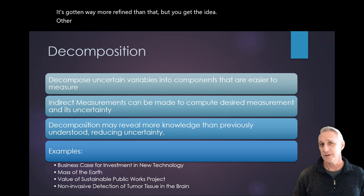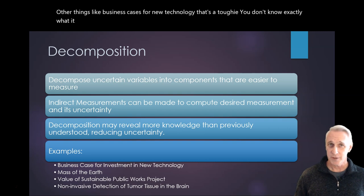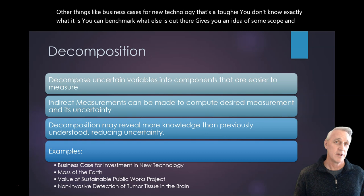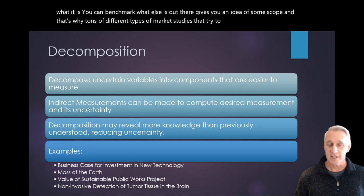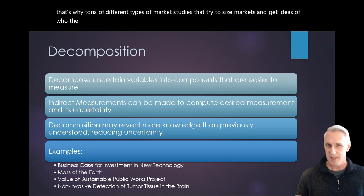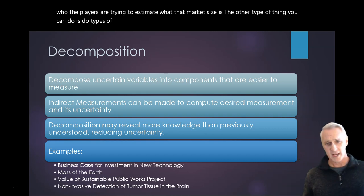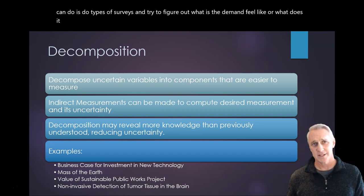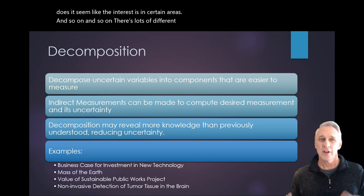Now, it's gotten way more refined than that, but you get the idea. Other things like business cases for a new technology. That's a toughie. You don't know exactly what it is. You can benchmark what else is out there. It gives you an idea of some scope. And that's why you see tons of different types of market studies that try to size markets and get ideas of who the players are and trying to estimate what that market size is. The other type of thing you can do is do types of surveys and try to figure out what does the demand feel like or what does it seem like the interest is in certain areas.